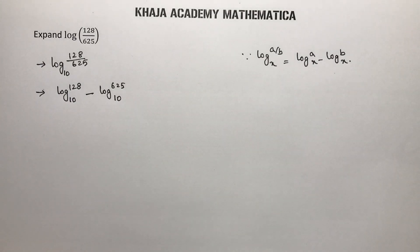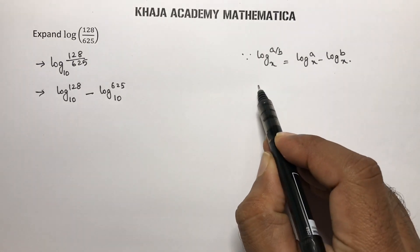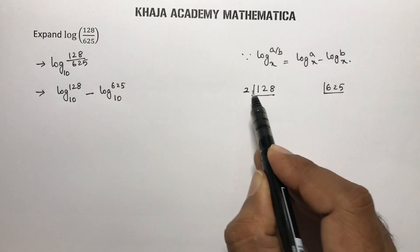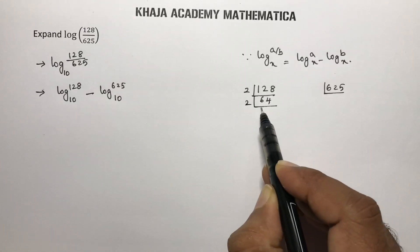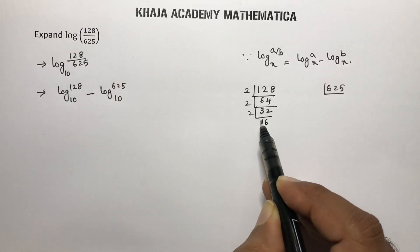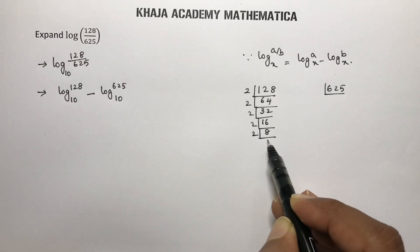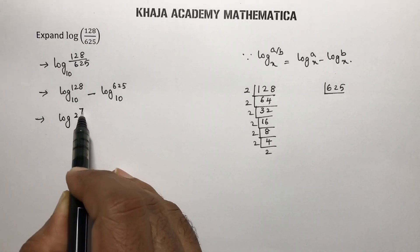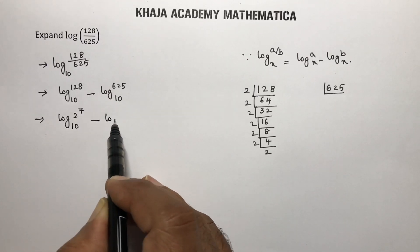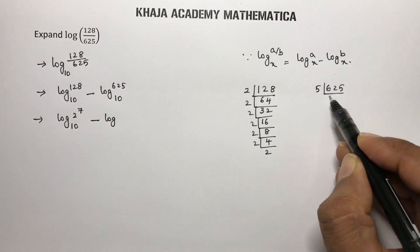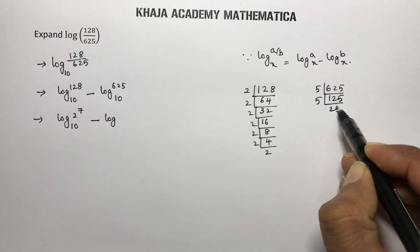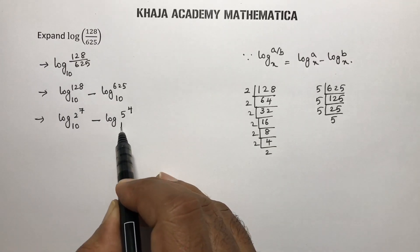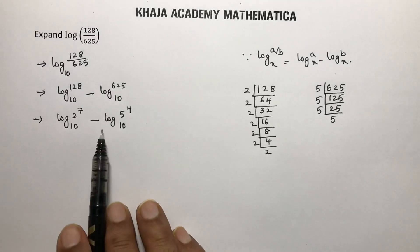If the base is not given, you can take base 10, which is the standard Briggs logarithm. Now find the prime factors of 128 and 625. For 128: 2 times 64, 2 times 32, 2 times 16, 2 times 8, 2 times 4, 2 times 2, so 128 equals 2 power 7. For 625: 5 power 4. So we have log 2 power 7 to the base 10 minus log 5 power 4 to the base 10.